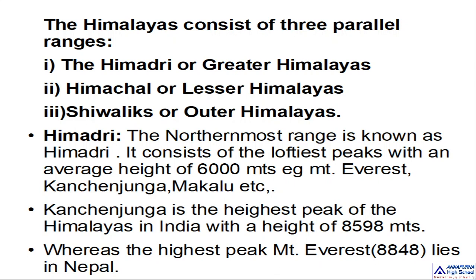Kangchenjunga is the highest peak of the Himalayas in India, with a height of 8,598 meters. The highest peak in the world, Mount Everest, is 8,848 meters and lies in Nepal. In the coming videos I will tell you about the Himachal, Shivaliks, and the benefits of Himalayas. In the next video we shall discuss all the remaining parallel ranges. Till then, goodbye my dear children. Thank you.